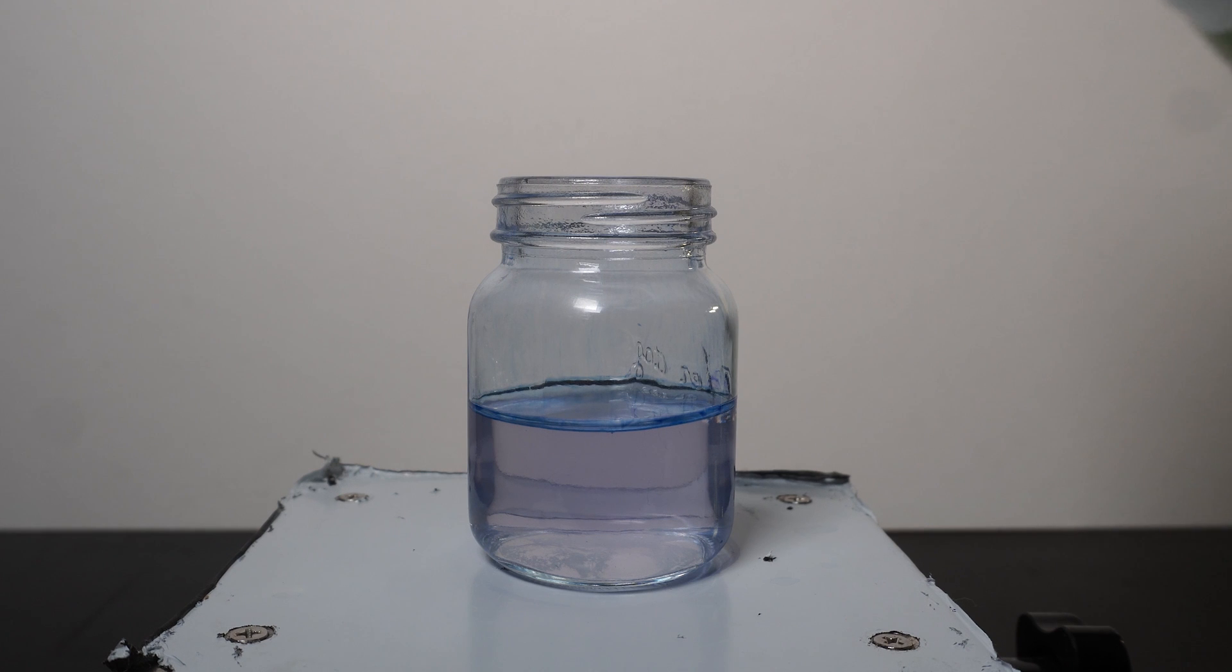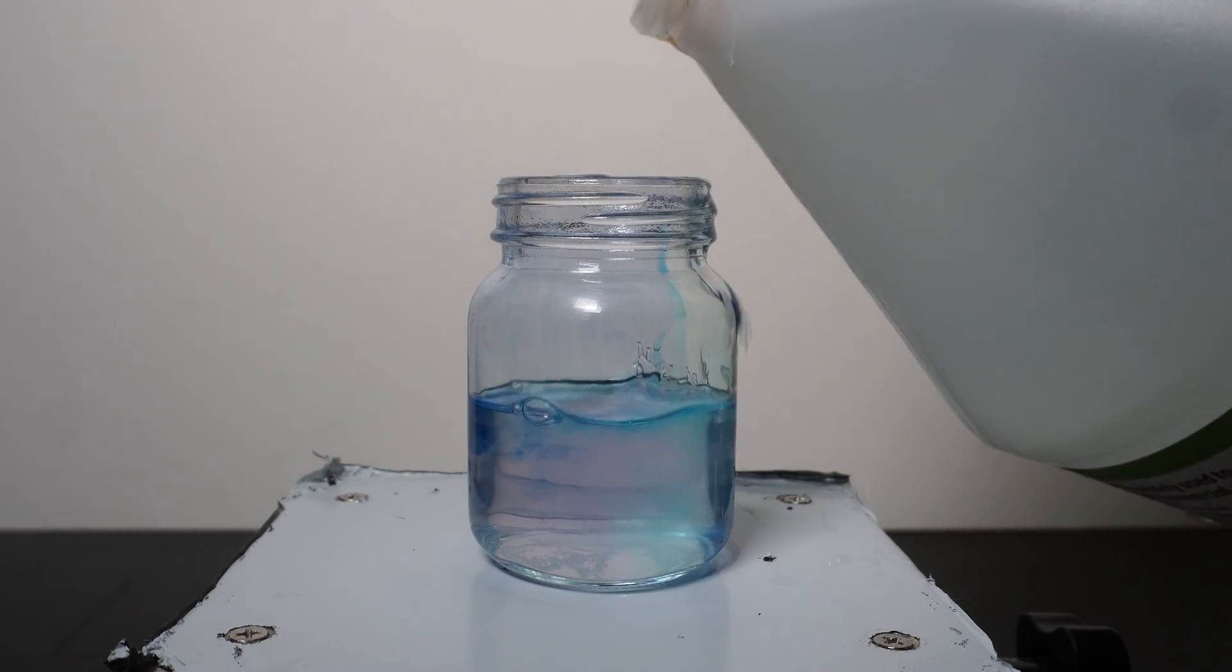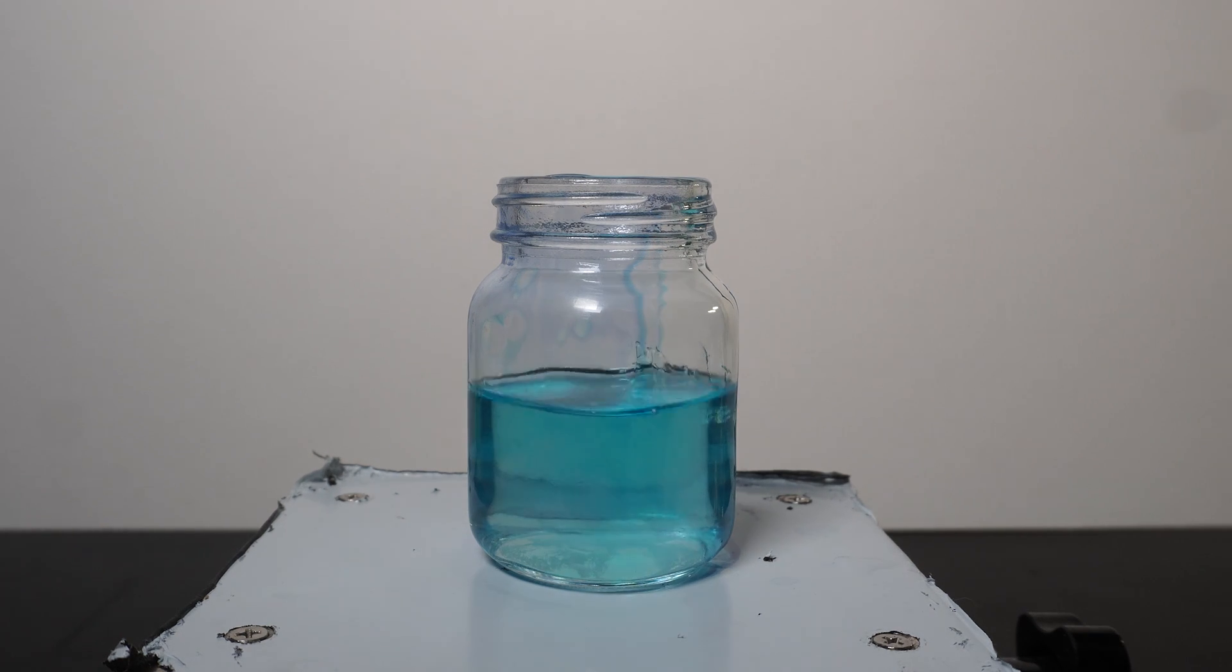To clean this up, we just need to neutralize the solution down to between 5 and 7 pH. To do this, I add in some 30% acetic acid. This creates potassium acetate, which is actually 100% okay to dump down the drain.